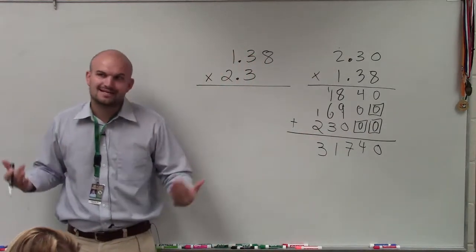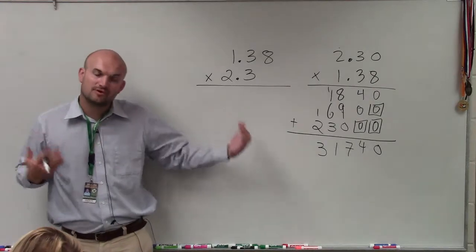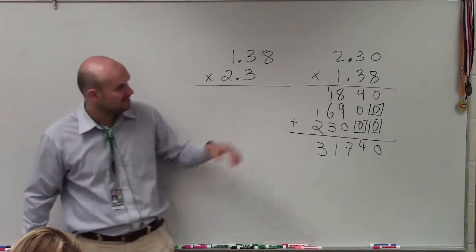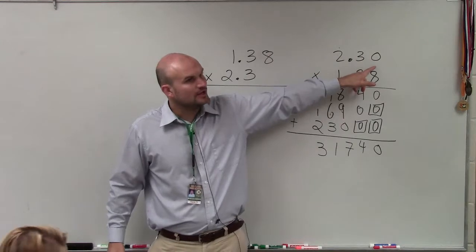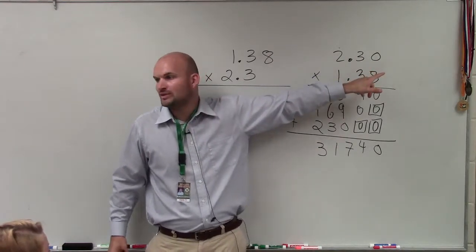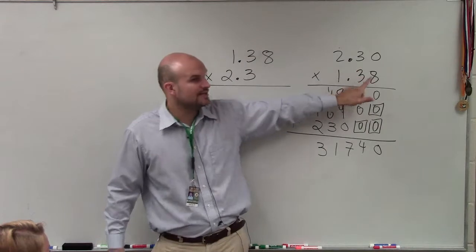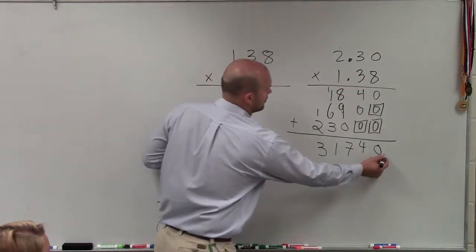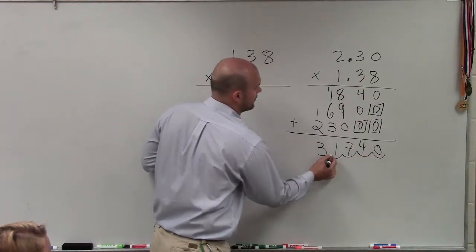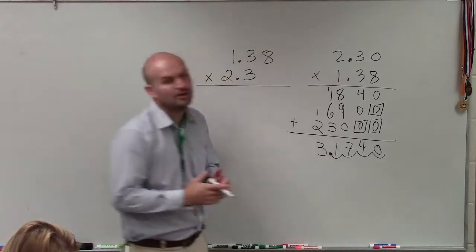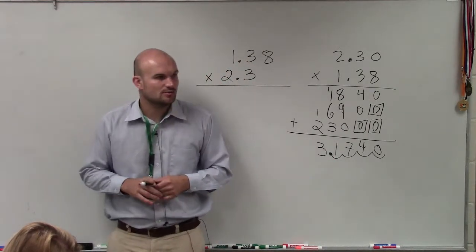Now where exactly does the decimal place go? For multiplication, this is a very helpful trick. We include that place value. All I want you to do is add up all the place values to the right of the decimal point. 1, 2, 3, 4. 1, 2, 3, 4. 3.1740 would be your final answer.